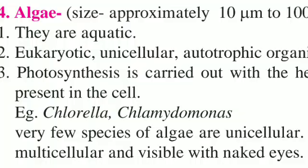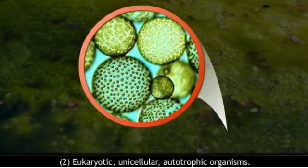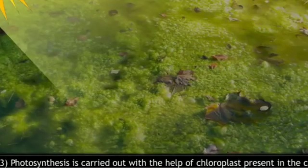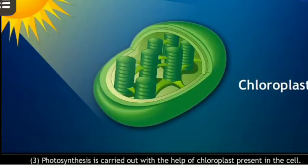Let us move towards algae. They are aquatic, eukaryotic, unicellular, and autotrophic organisms. Photosynthesis is carried out with the help of chloroplasts present in the cell. Examples are Chlorella and Chlamydomonas. Very few species of algae are unicellular; most of them are multicellular and visible with the naked eye.